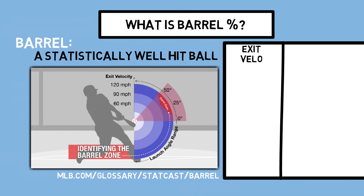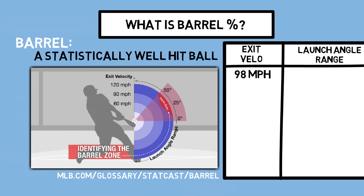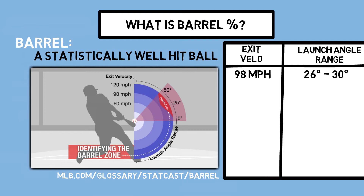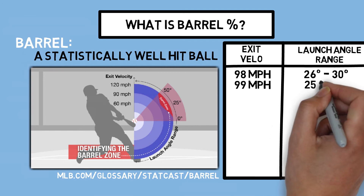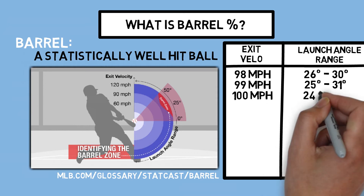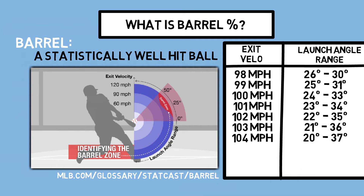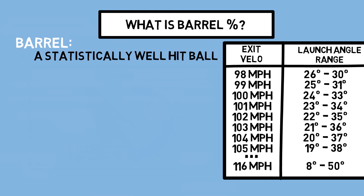The barrel zone is quantified starting with balls hit above 98 miles per hour between launch angles of 26 to 30 degrees. As exit velocity increases, the launch angle range expands: at 99 mph it's 25 to 31 degrees, at 100 mph it's 24 to 33 degrees. That trend continues until it maxes out at 116 mph, where the launch angle range sits from 8 to 50 degrees. If you're looking to calculate this with your own TrackMan data, that is your guide.